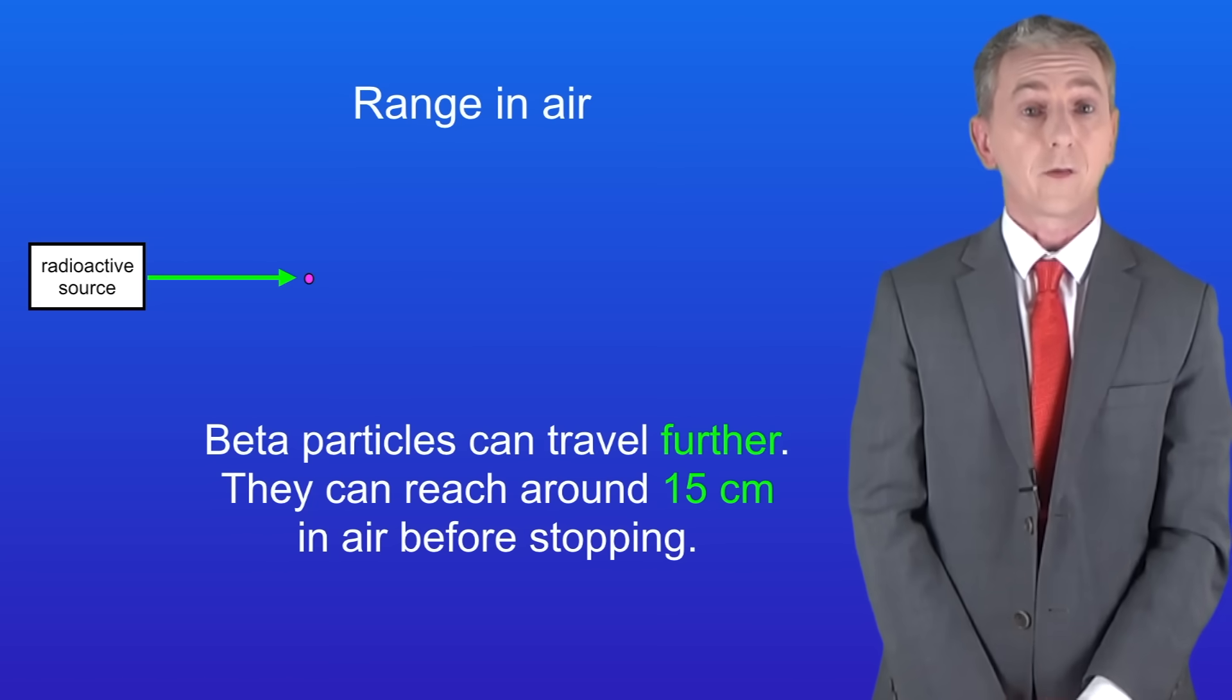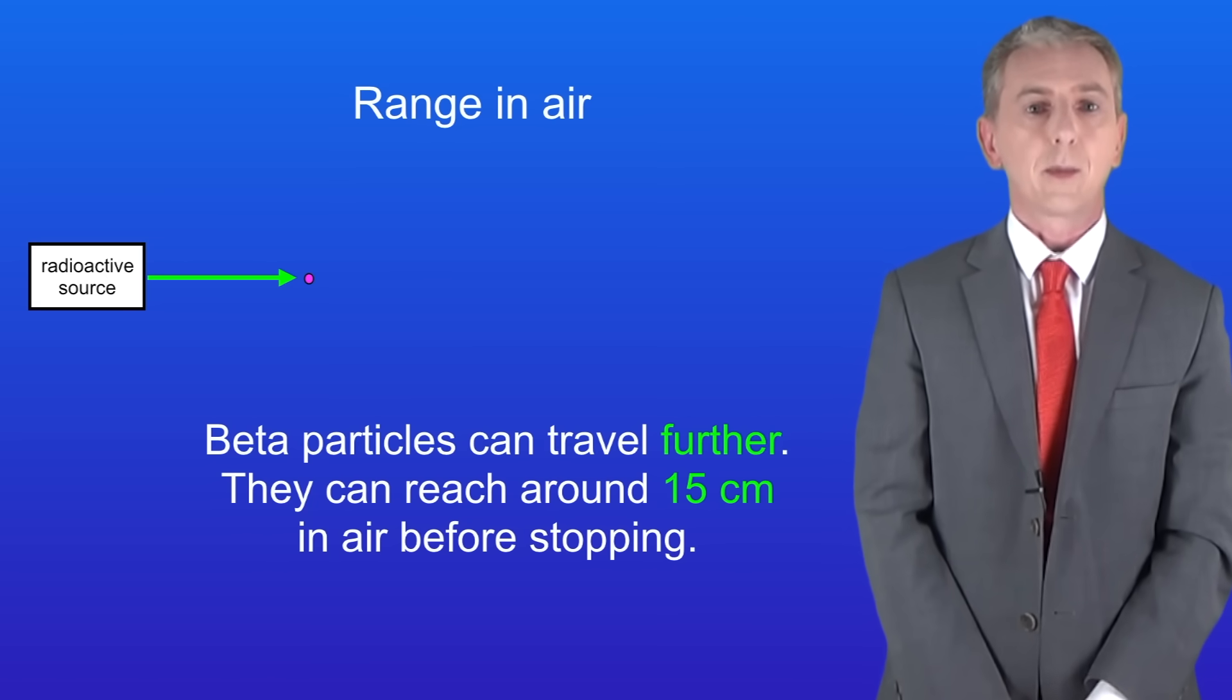Beta particles on the other hand can travel further, they can reach around 15 centimeters in air before stopping.